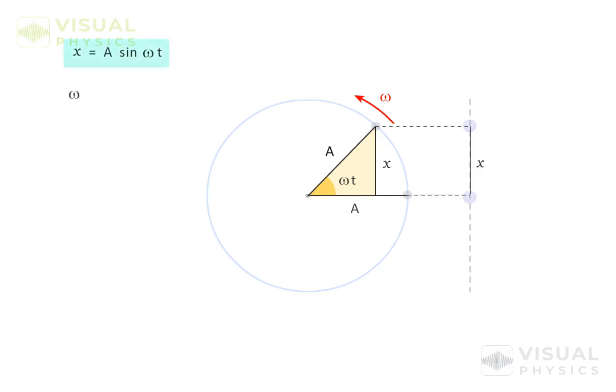As ω is a measure of the angular displacement per second, ω can also be considered as the angular frequency in the context of an SHM.